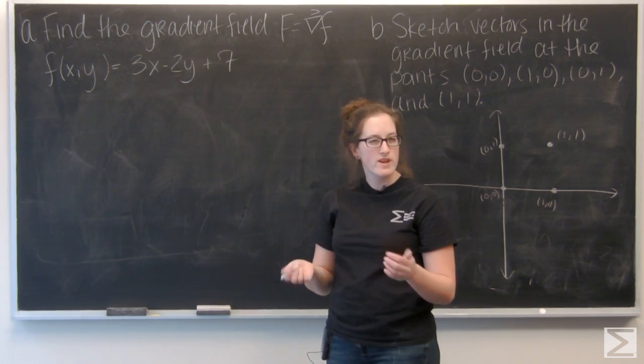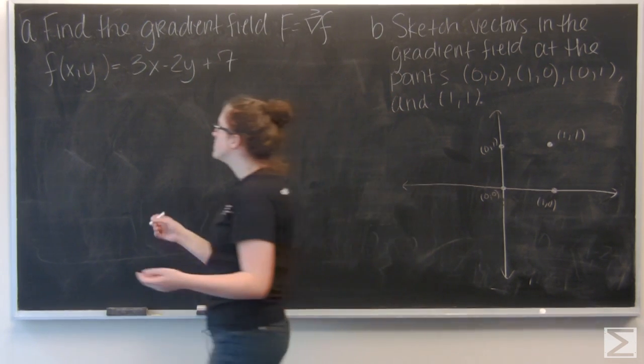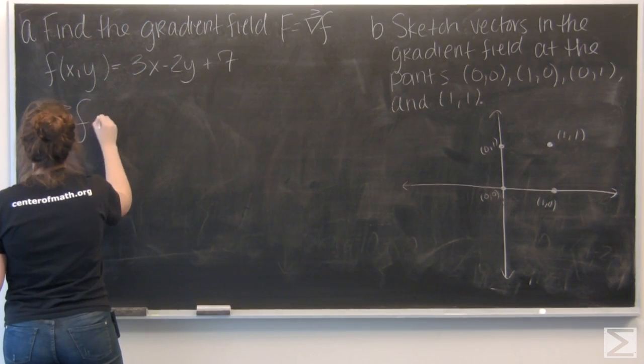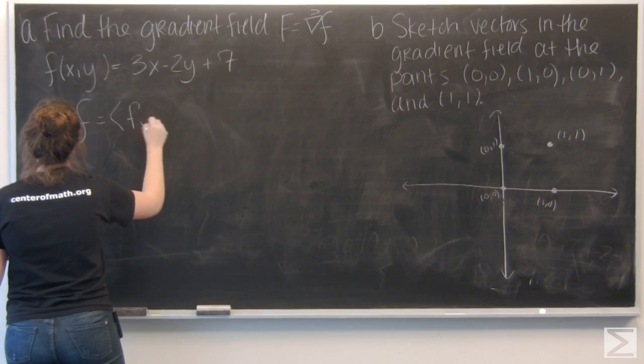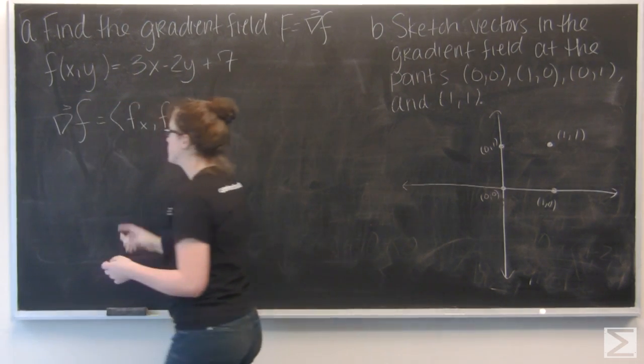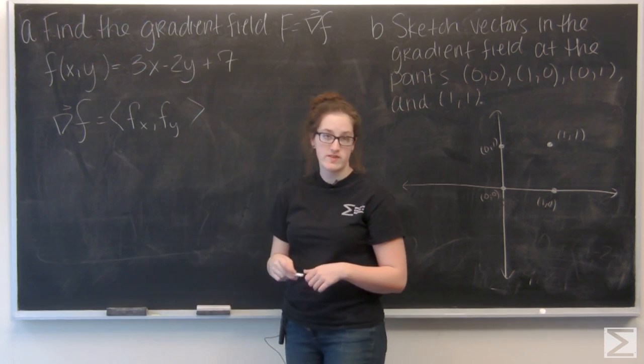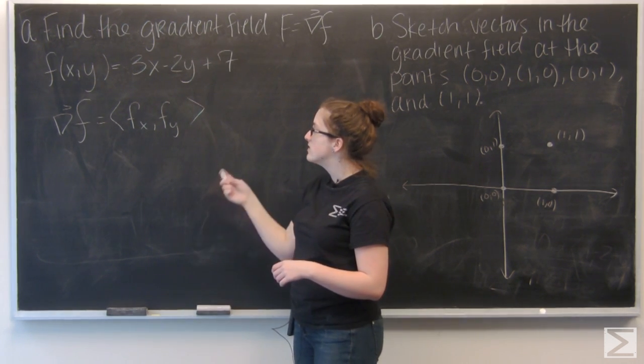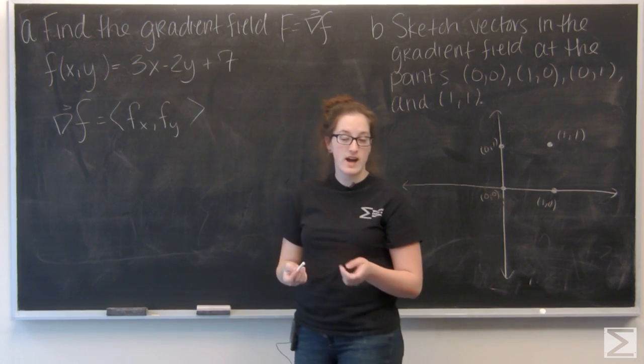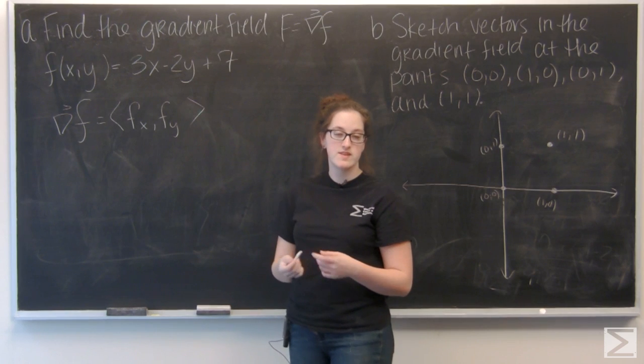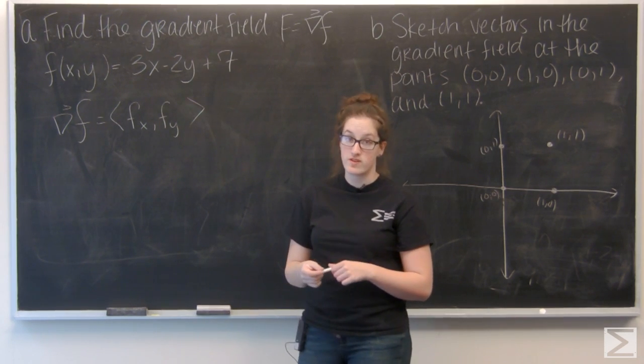Let's recall what exactly the gradient field is. The gradient field is a vector and its components are the partial derivatives of f. For a function of x and y, the i component of the gradient is the partial derivative with respect to x, and the j component is the partial derivative with respect to y.